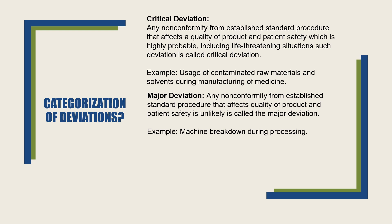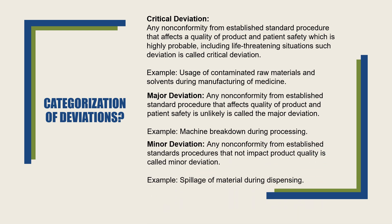A major deviation is any non-conformity from an established standard procedure that affects product quality but is unlikely to impact patient safety. An example of a major deviation is machine breakdown during processing. A minor deviation is any non-conformity from an established standard procedure that does not impact product quality, such as spillage of material during dispensing. Minor deviations do not impact product quality or patient safety.